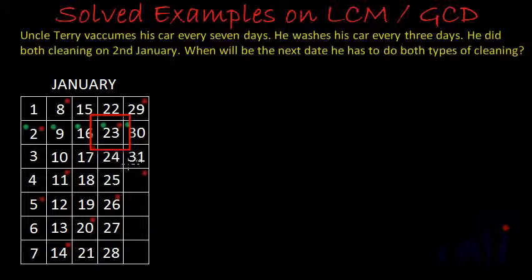We can solve it using this calendar by drawing dots or calculating manually. But there is a smart way of doing this, and that smart way involves mathematical calculations. Uncle Terry vacuums his car on every 7th day — in every 7 days he vacuums his car once. So the number of days after which he is vacuuming his car is actually a multiple of 7. First time after 2nd January he vacuums on 9th, which is exactly after 7 days from 2nd of January.